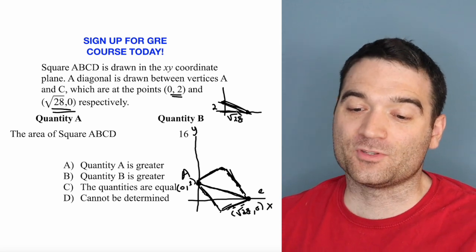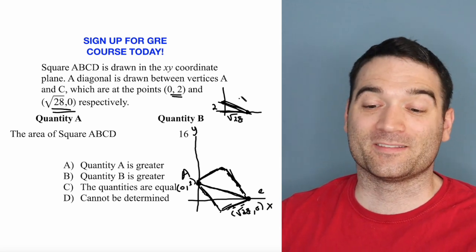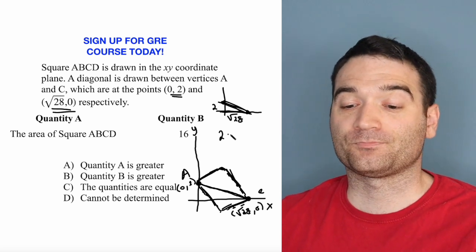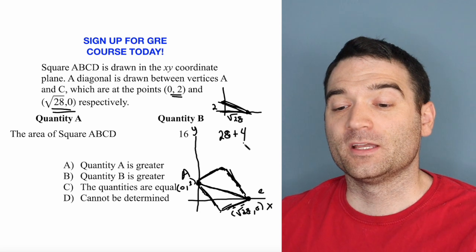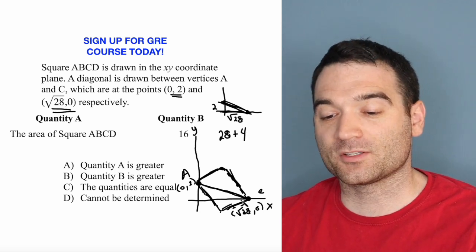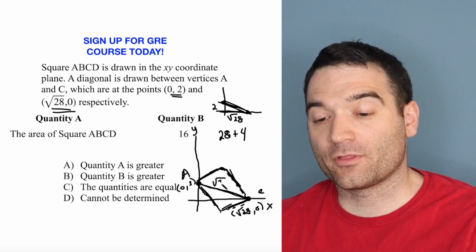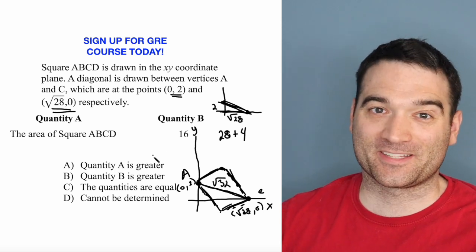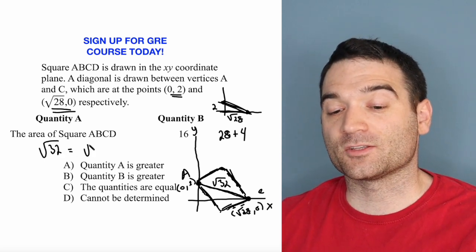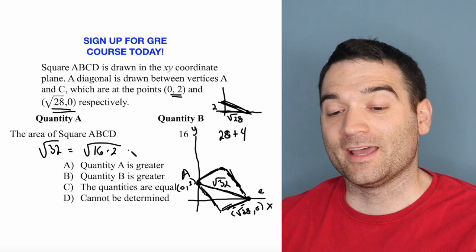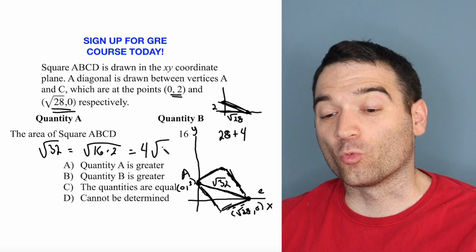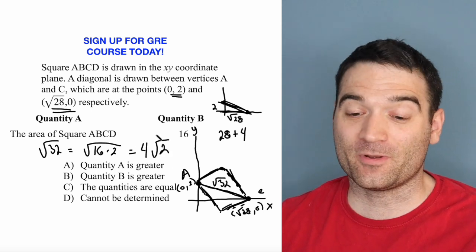meaning that the hypotenuse of this is a² + b² = c² and take the square root. So what is a² + b²? Well, (√28)² is 28 plus 2² is 4. So that means that this distance, this diagonal across the square has to be √32. Watch what happens when we simplify this down. This is a hard problem. √32 is the same thing as the square root of 16 times 2. And the square root of 16 times 2 is the same thing as 4√2. I can take the 16 out and take the square root of that.